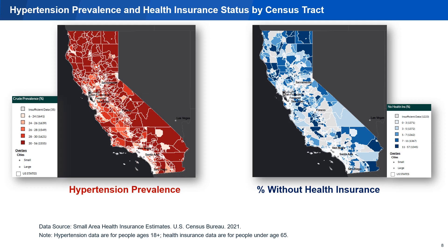Lack of health insurance is an obstacle to accessing health care. With the Atlas, we can compare the geographic patterns of hypertension prevalence at the census tract level to the percent of those without health insurance, also by census tract.